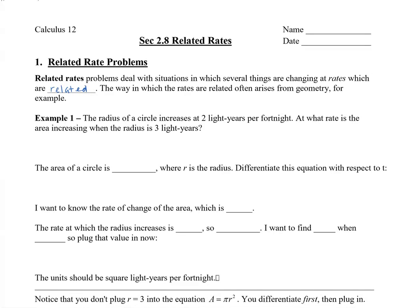The way in which the rates are related often arises from geometry. For example, let's say we have the radius of a circle, and the radius of the circle increases at two light years per fortnight — a fortnight is actually two weeks. The question is: at what rate is the area increasing when the radius is three light years?